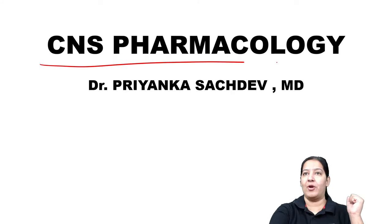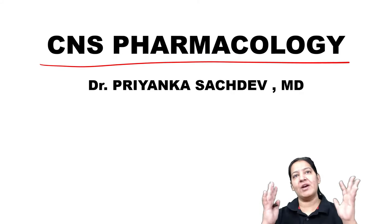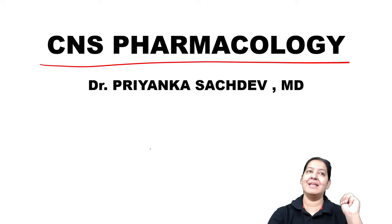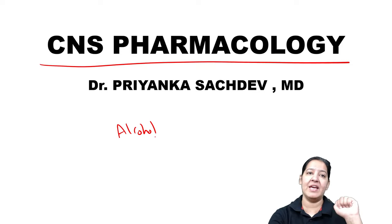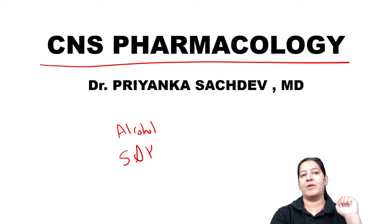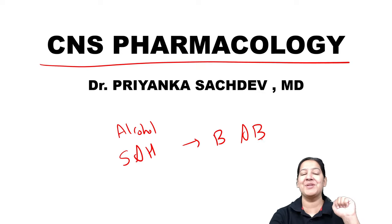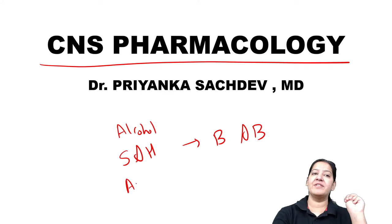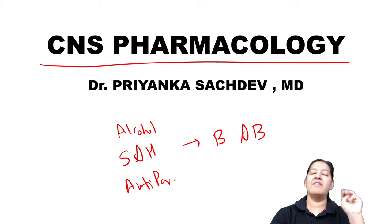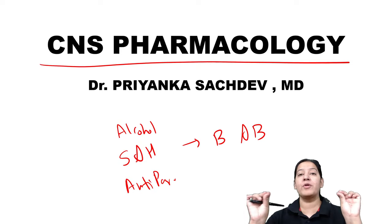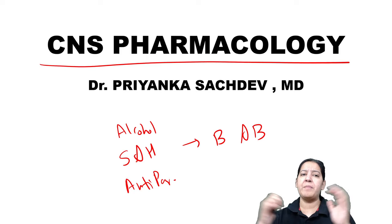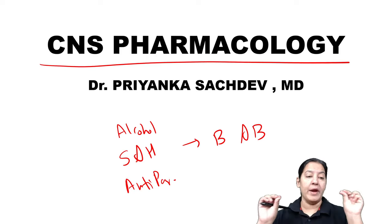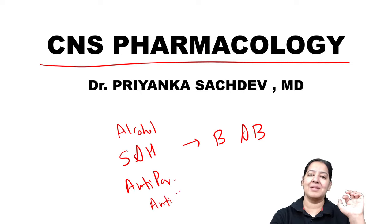Today I'm here to continue my series on CNS pharmacology — drugs acting on the central nervous system. We have completed three chapters: alcohols, sedatives and hypnotics (barbiturates and benzodiazepines), and anti-Parkinsonian drugs including levodopa. Now it's time to start anti-epileptic drugs.